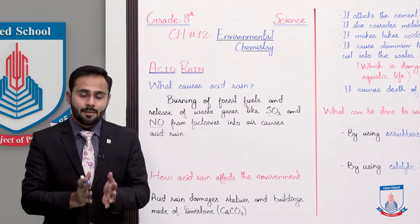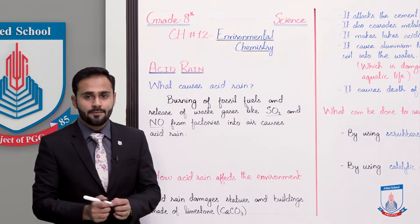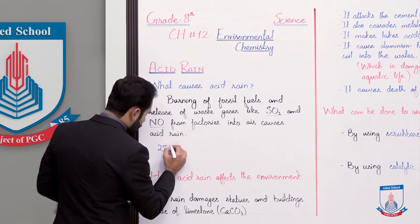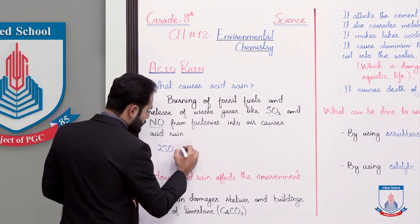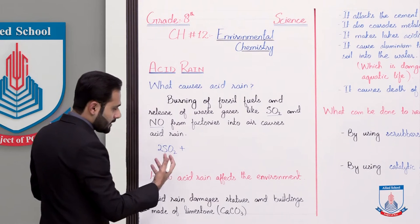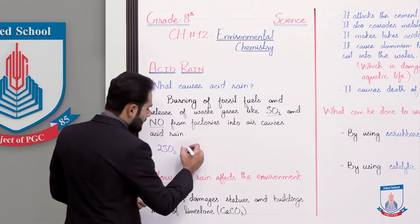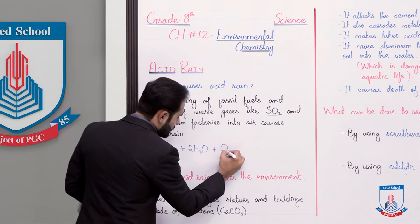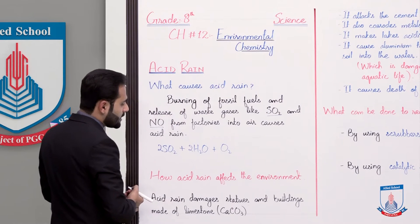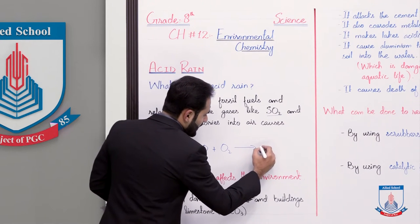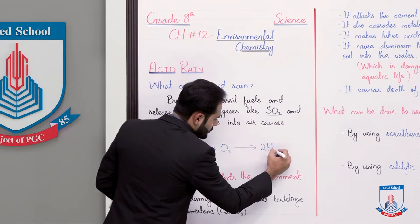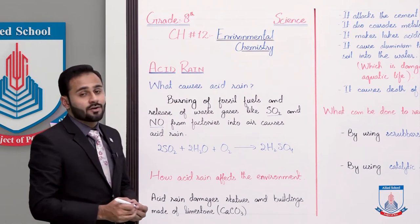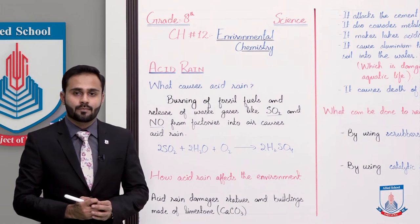So let's discuss this with a chemical equation. Let's suppose 2SO2 means sulphur dioxide gas, which is coming out from factories and power plants, plus the water molecules in air, 2H2O, and plus oxygen which is present in air. When they react together, they will form 2H2SO4 which is sulphuric acid, and this is very strong.